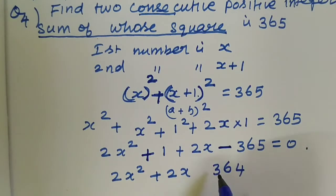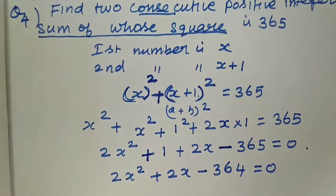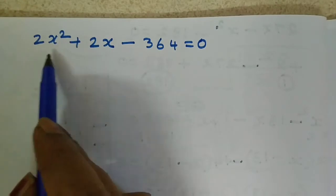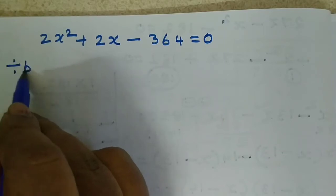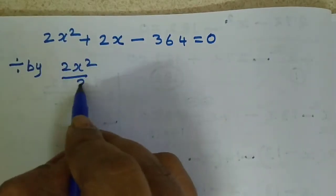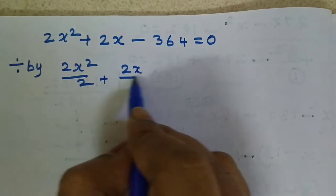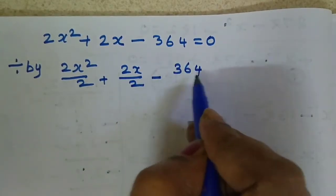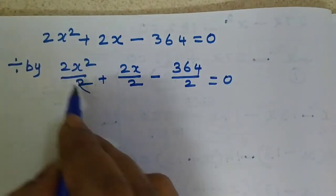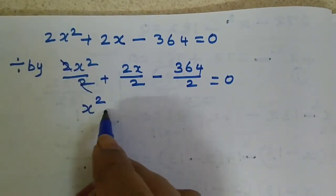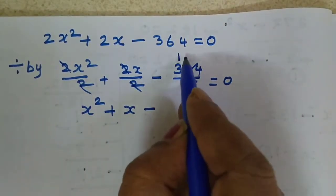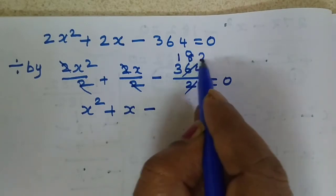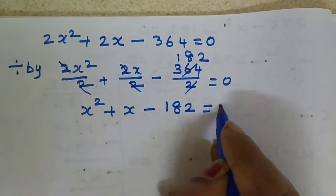The answer is 364, and we put the greater number's sign. Now, all numbers are even, so we divide by 2: 2x squared by 2, 2x by 2, and 364 by 2, equal to 0. This simplifies to x squared plus x minus 182 equal to 0.